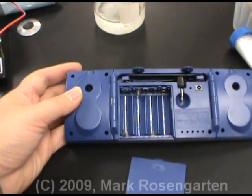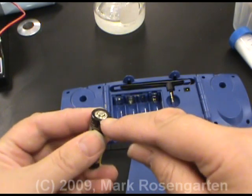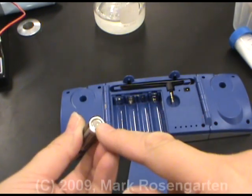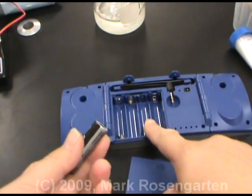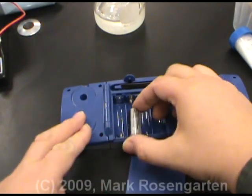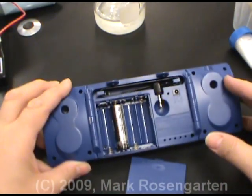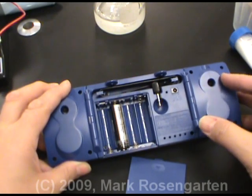When you plug in a AA battery, the bumpy end is positive, the flat end is negative. And the device is designed so that the flat end goes against a spring and then pops into place so that you can't put it in backwards.